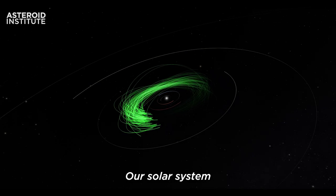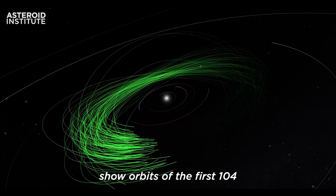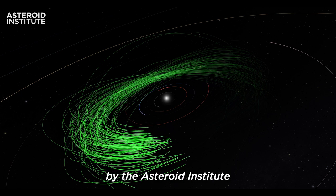Our solar system, our home planet. Here, green lines show orbits of the first 104 new asteroids discovered by the Asteroid Institute.